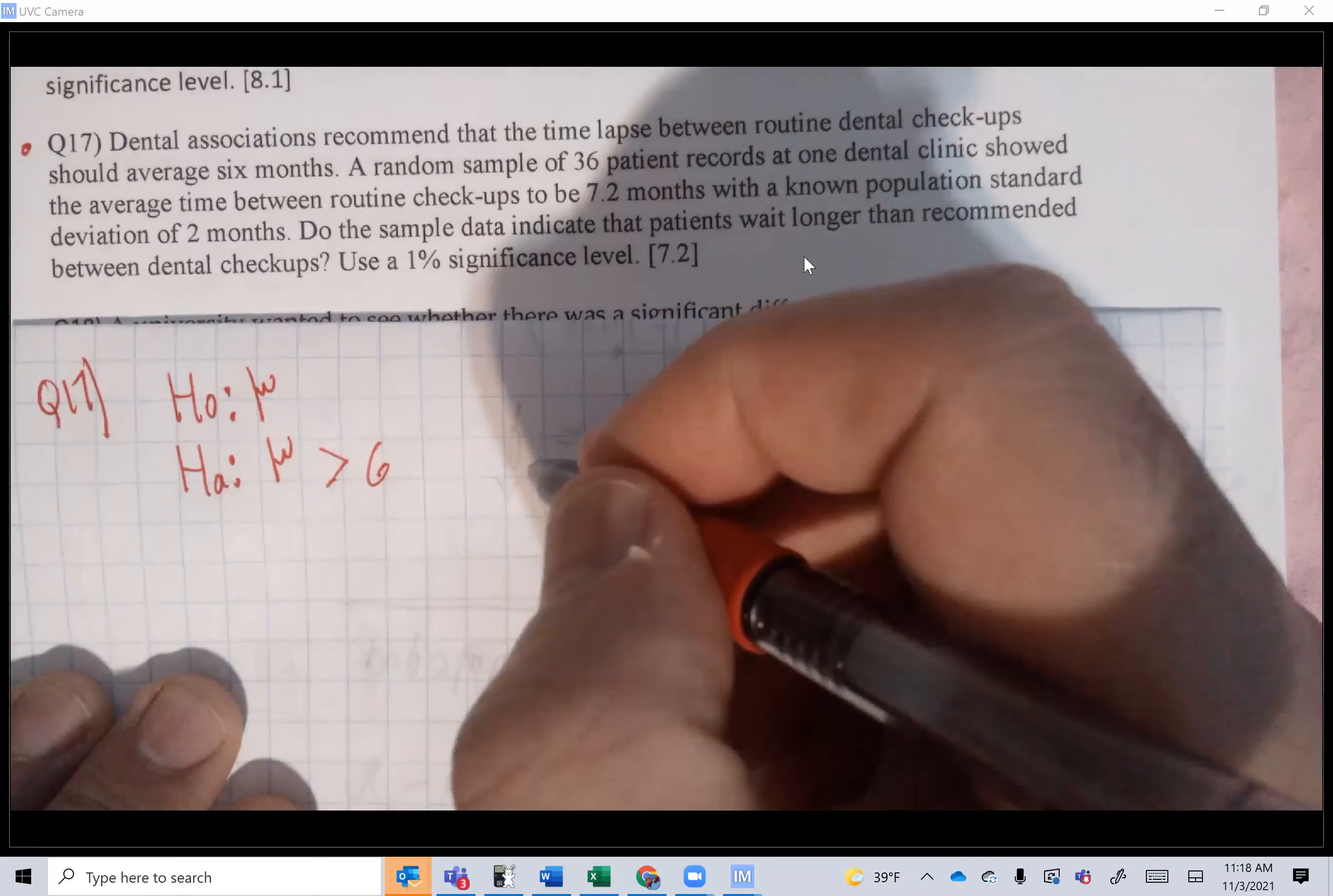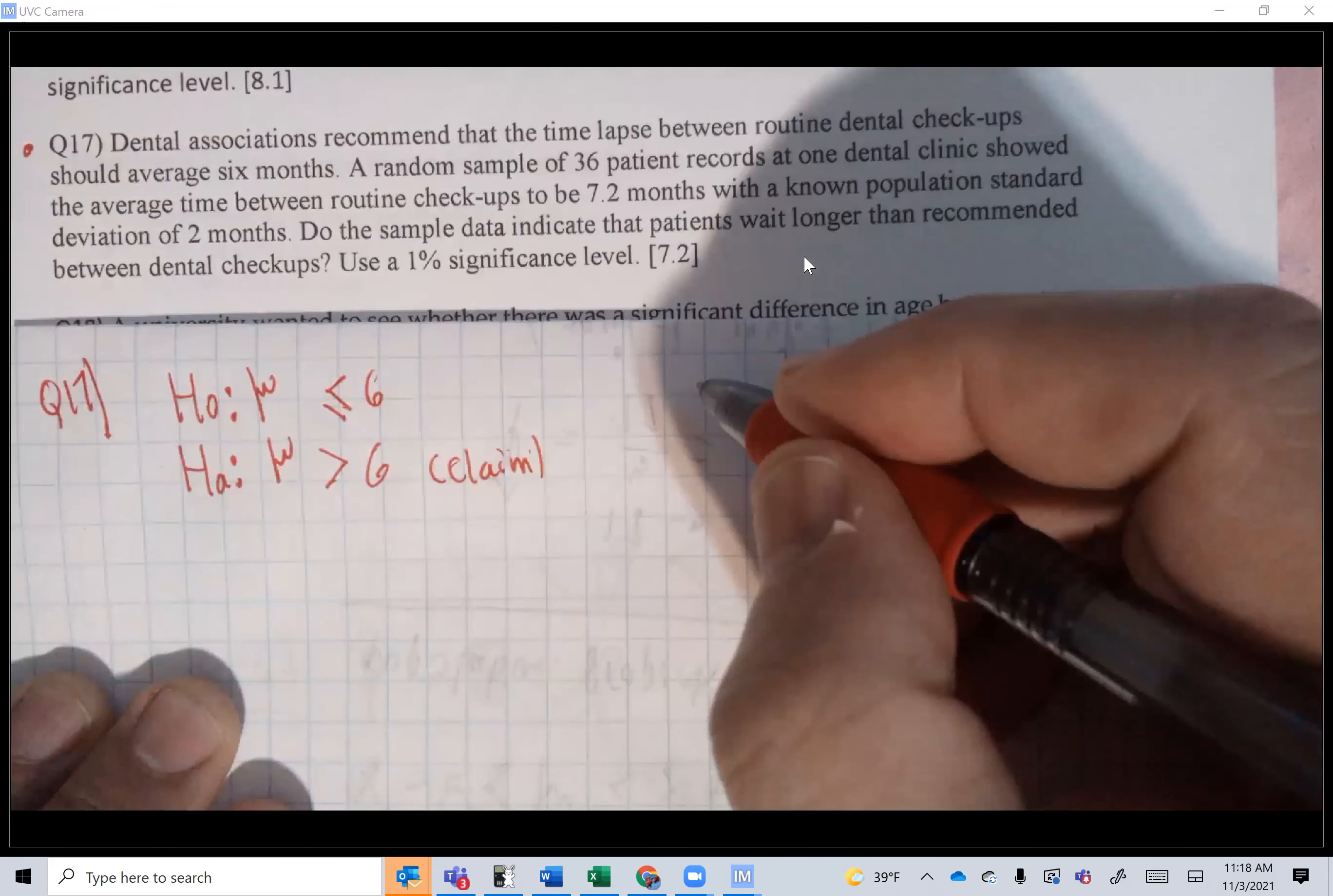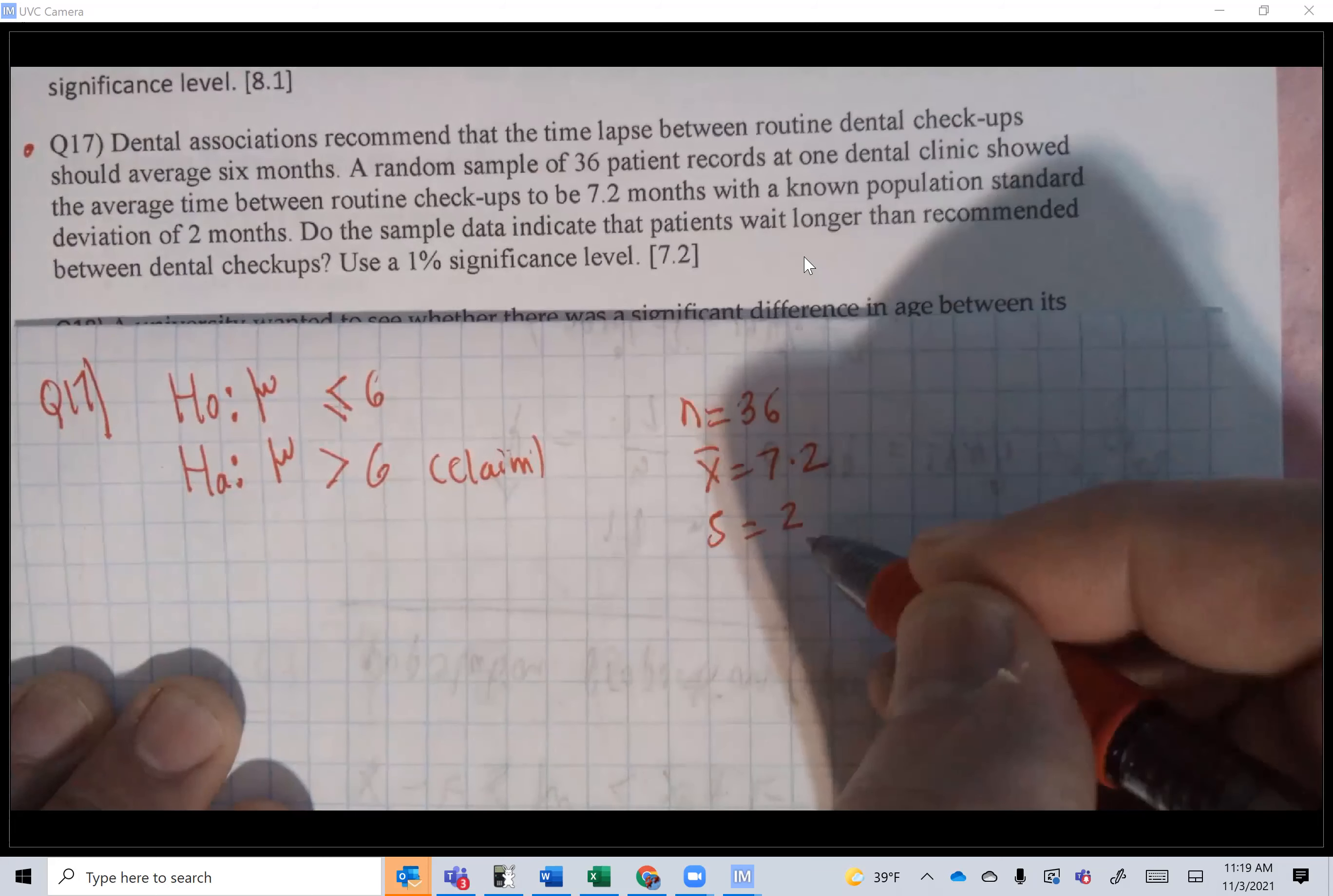HA: μ > 6. That's the claim. H0: μ ≤ 6. Now n is 36, x̄ is 7.2, standard deviation is 2, and alpha is 1%.